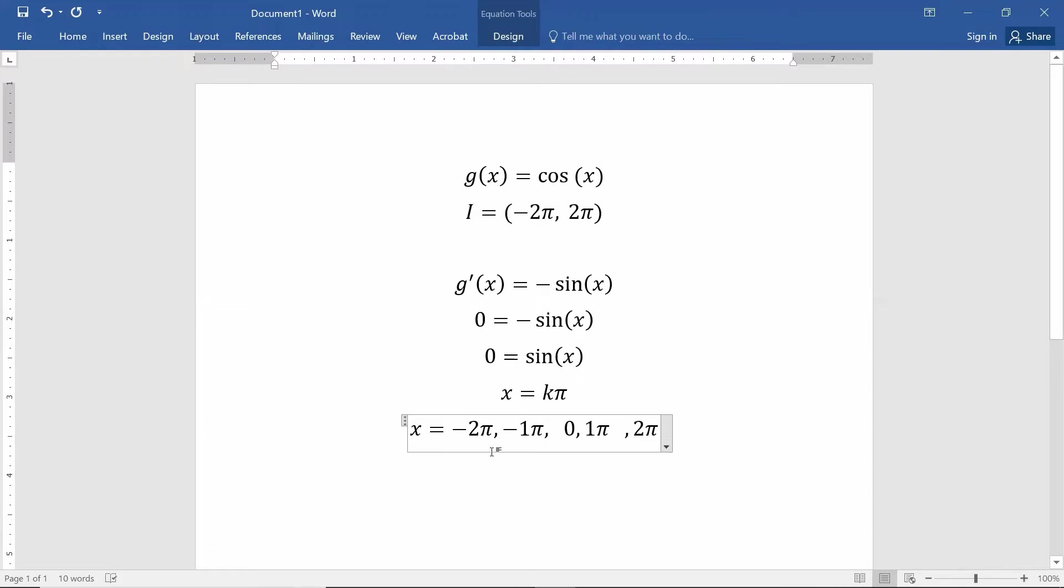This shows us where the divisions on the subintervals are going to be. So the subintervals start at the left hand point of the main interval, which just happens to be a critical value. So it starts at negative 2π and it goes all the way up to the next critical point, which is negative 1π.